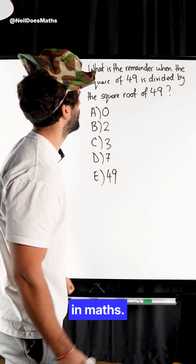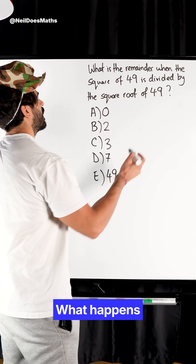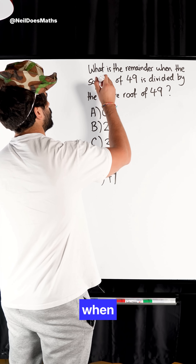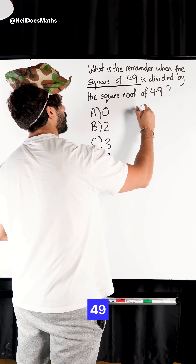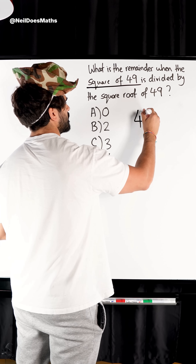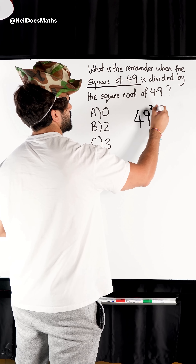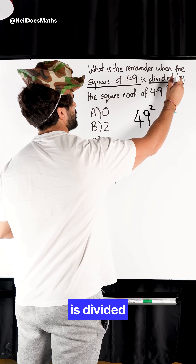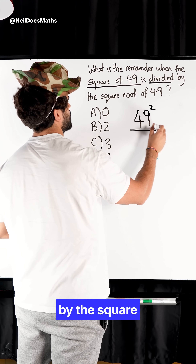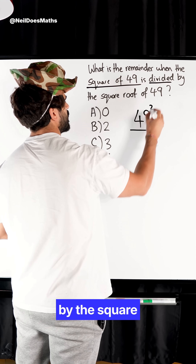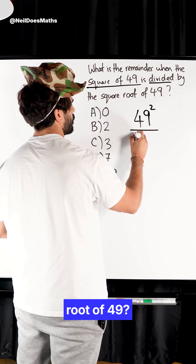All right, let's write this in maths. What happens when the square of 49 is divided by the square root of 49?